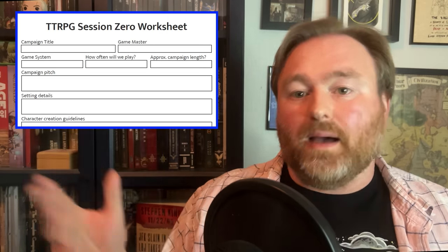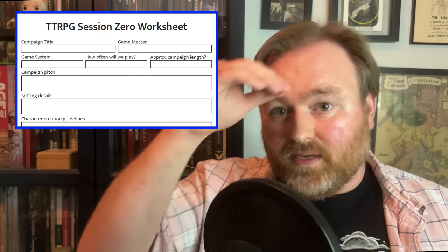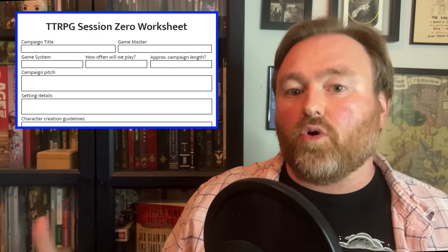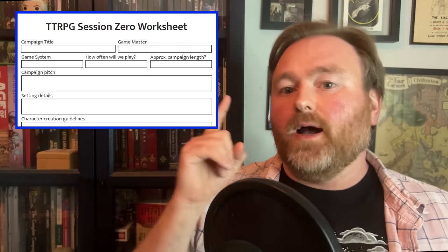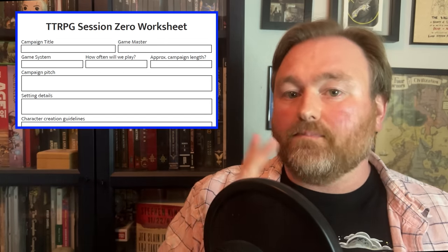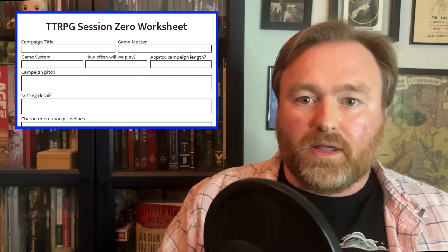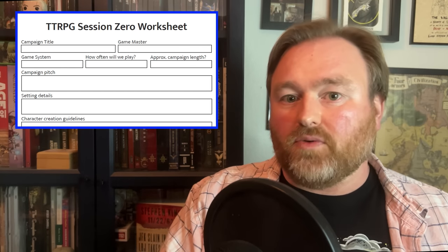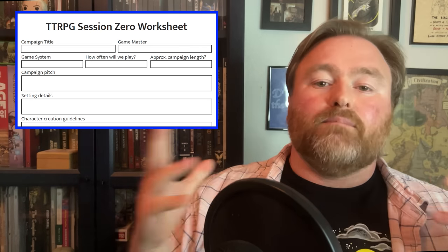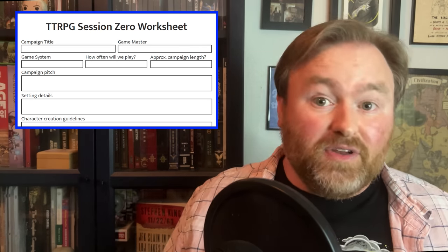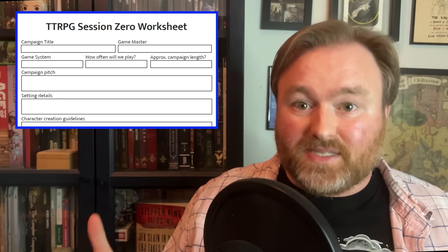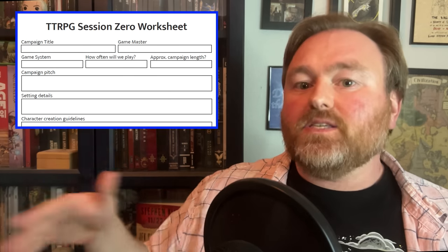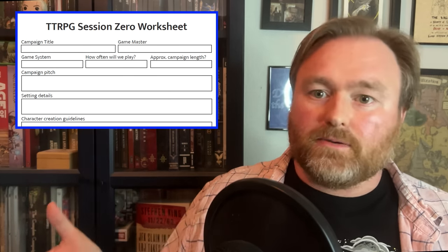First, the top of the form has some basics. If your campaign has a title, it can go here. Besides that, the core questions are: who's running the game, what system are we playing, how often do we want to play, and how long might this campaign run? We can't possibly cover everything you need to know about scheduling in this video or on this worksheet, but this is a good place to start.